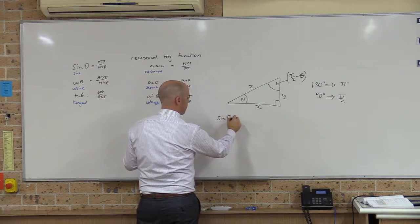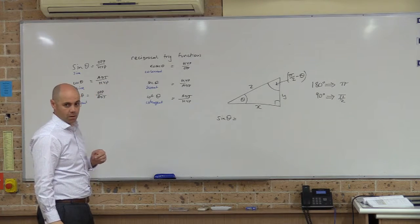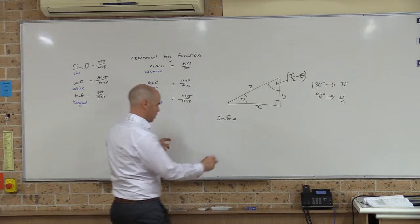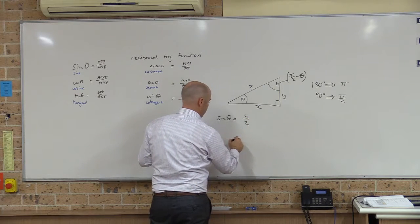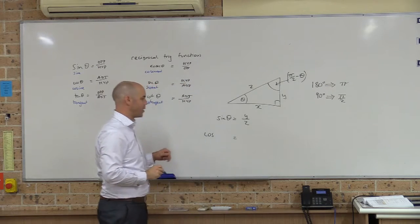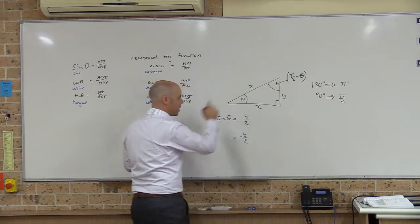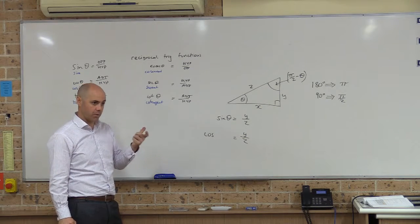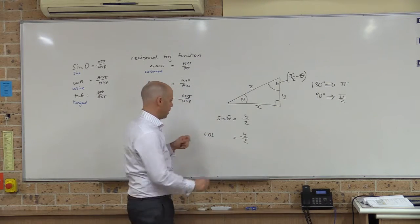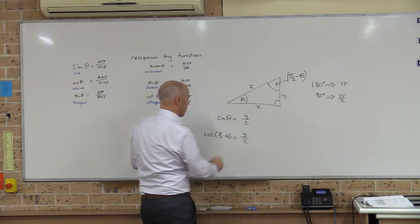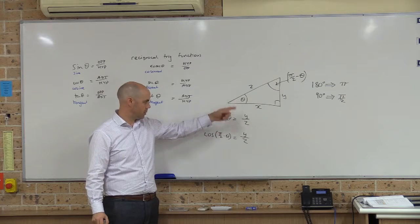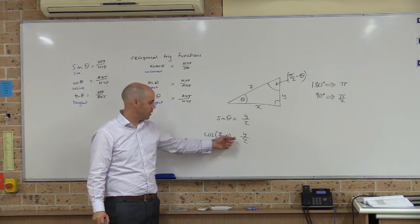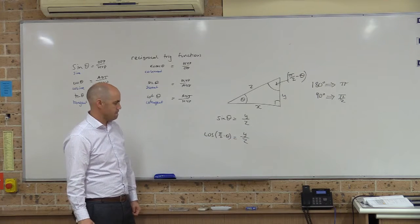Sine of theta in this triangle is y over z. Now, the cosine of the complementary angle — pi over 2 minus theta — is also the same ratio, y over z.